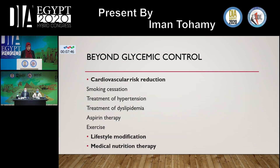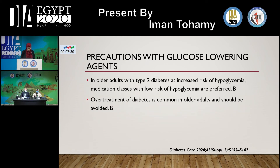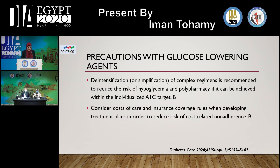Beyond glycemic control, cardiovascular risk reduction, lifestyle modification, and medical nutrition therapy are important. Greater reductions in morbidity and mortality are likely to result from control of cardiovascular risk factors rather than from tight glycemic control alone. Pharmacologic therapy must be individualized based upon patients' abilities and comorbidities. Oral and injectable agents with low risk of hypoglycemia are preferred in older adults. Overtreatment of diabetes is common in older adults and should be avoided. Intensification or simplification of complex regimens is recommended to reduce risk of complications. We should also consider costs of care and insurance coverage when planning treatment to reduce risk of cost-related non-adherence.